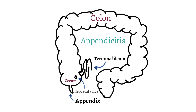As a side note, the ileocecal valve is a one-way valve located where the terminal ileum, the last part of the small bowel, empties into the colon. The ileocecal valve allows flow from the small bowel to enter the colon, but prevents content from the colon entering the small bowel.